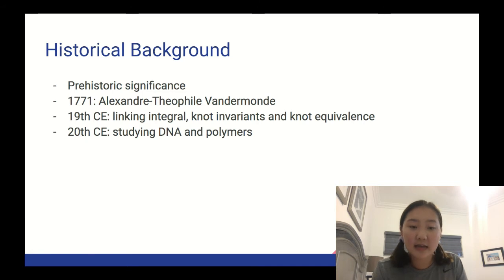In 1771, Alexander Theophile Vandermond started studying knots in the context of topology and basic geometry, and during the 19th century, Gauss began studying the linking variable, which is the numerical invariant that describes the linking of two closed curves in a 3D space.